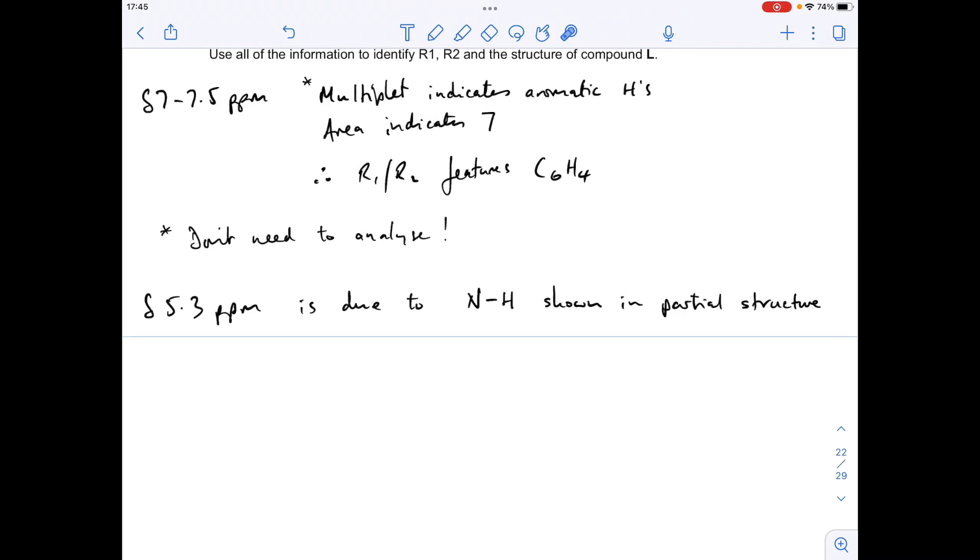Now remember, we're formulating our ideas at the moment, so we could be wrong there. So we may need to come back to that. But at the moment, I'm saying that that signal at delta 5.3 is due to that H bonded to that N.